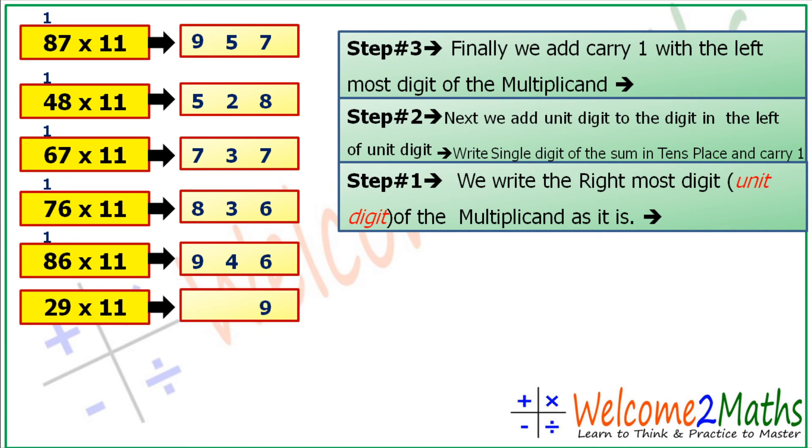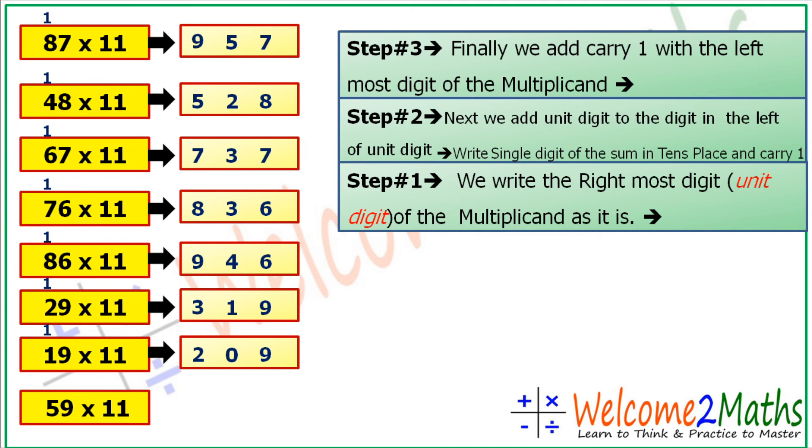After that, 29 into 11. Let's write 9 first. 9 plus 2 is 11, so write 1 at tens place and 1 becomes a carry. 1 plus 2 is 3. After that, 59 into 11. So let's write 9 first, and then 9 plus 5 is 14 and 1 becomes a carry. 1 plus 5 is 6. 649, we solved this question.